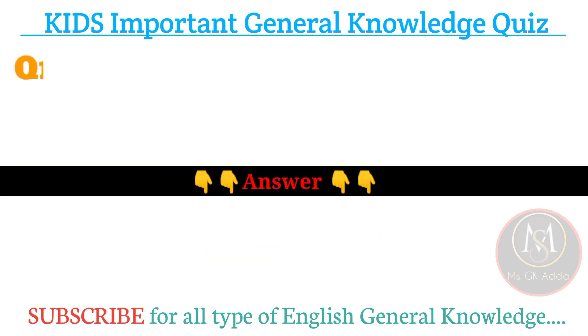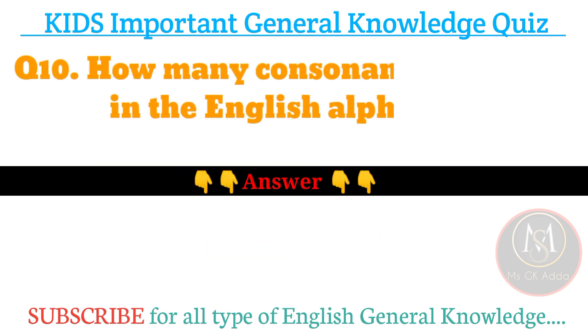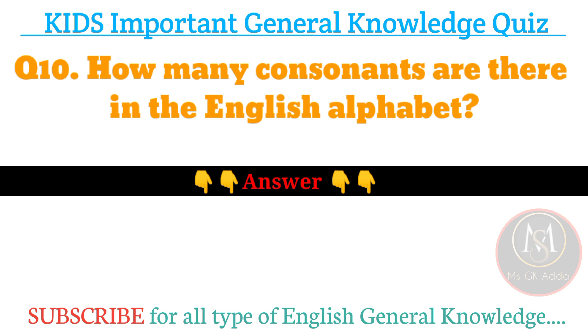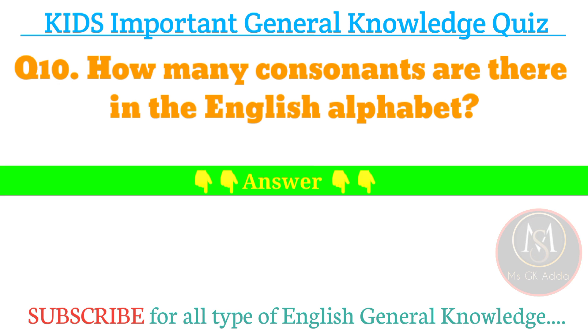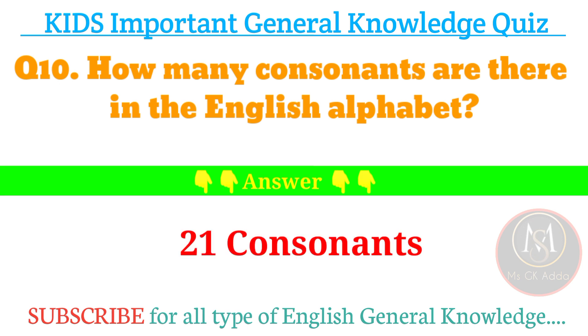Next, number ten: how many consonants are there in the English alphabet? Answer: twenty-one consonants.